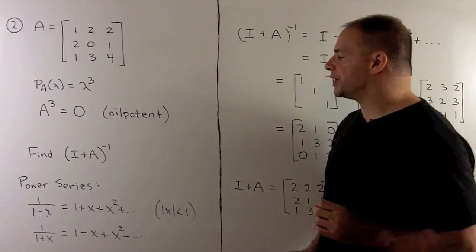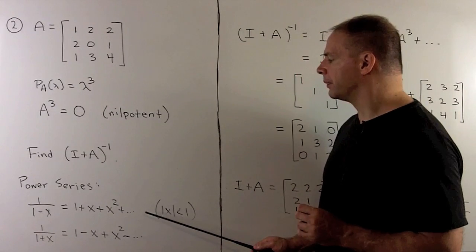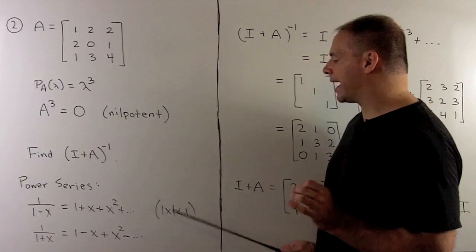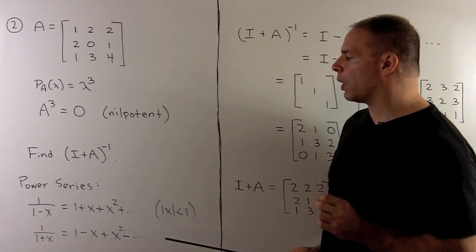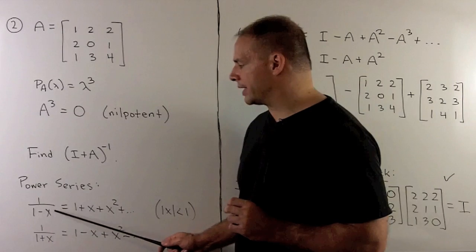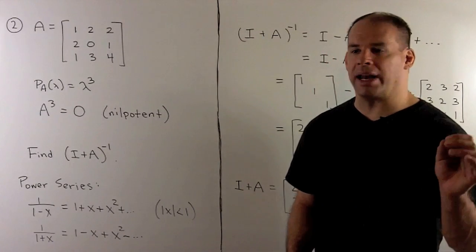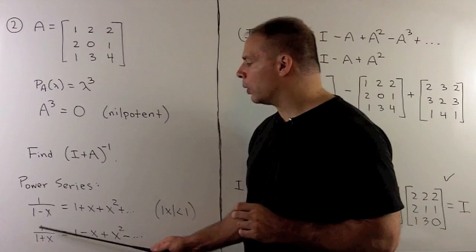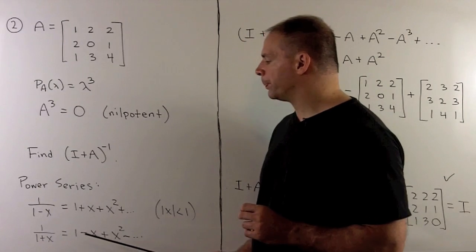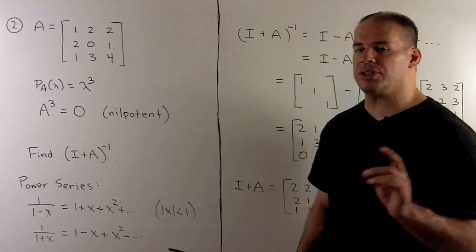The geometric power series will have 1 plus x plus x squared, and so on. This series converges when the absolute value of x is strictly less than 1, and then it converges to 1 over (1 minus x). If we replace x with minus x, we'll have 1 over (1 plus x) equals 1 minus x plus x squared minus x cubed, and so on.